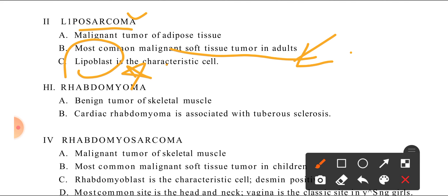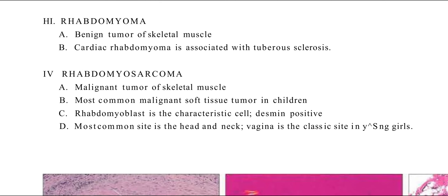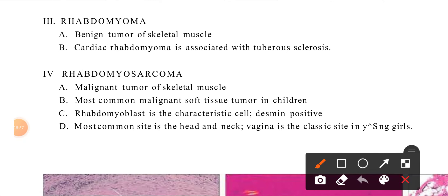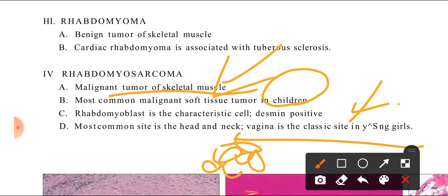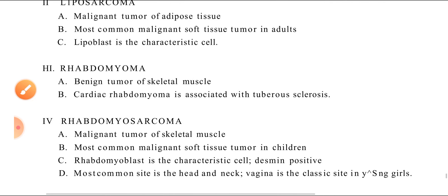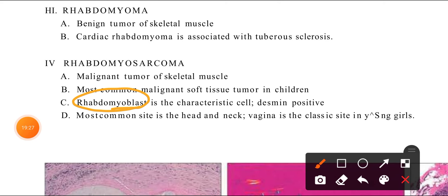The characteristic cell of liposarcoma is the lipoblast. Rhabdomyoma — 'rhabdo' means skeletal muscle, 'myoma' means benign tumor — is a benign tumor of skeletal muscle. Cardiac rhabdomyoma is associated with tuberous sclerosis, which causes multiple tumors throughout the body. Rhabdomyosarcoma is the malignant tumor of skeletal muscle.